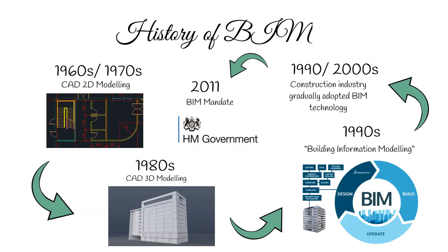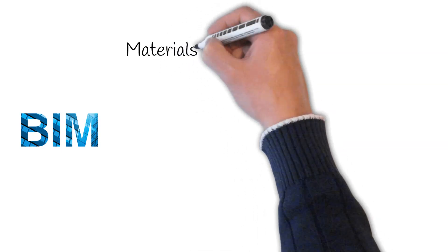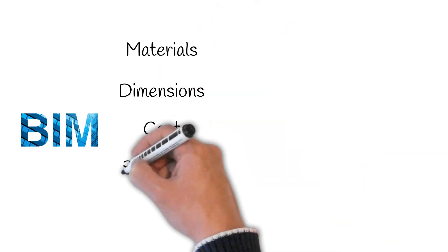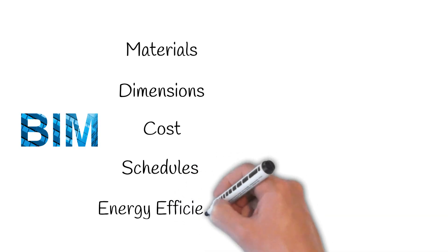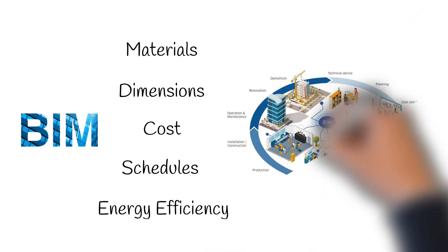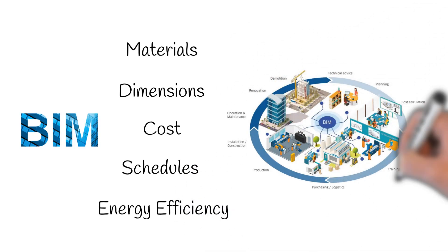Now the history lesson is over, let's delve deeper into the features of BIM. BIM is all about data. BIM incorporates information such as materials, dimensions, costs, schedules and even the energy efficiency of a building. This information is used from design and construction to operation and maintenance, and is accessed with varying permission levels by all project stakeholders.